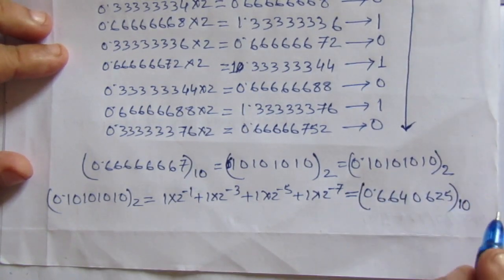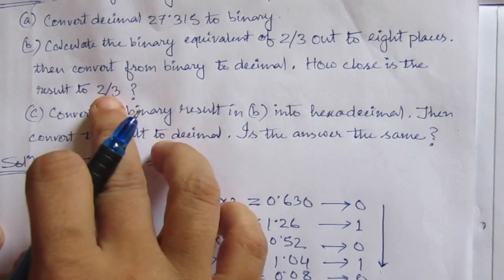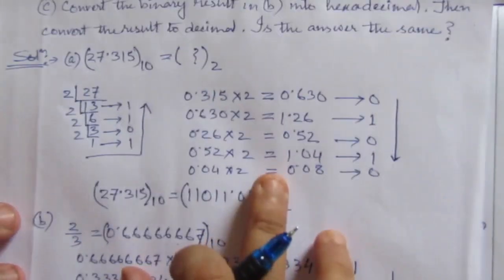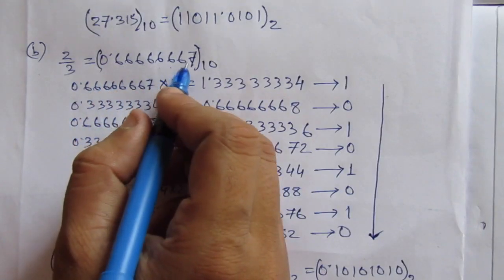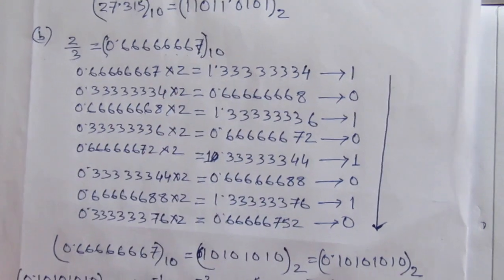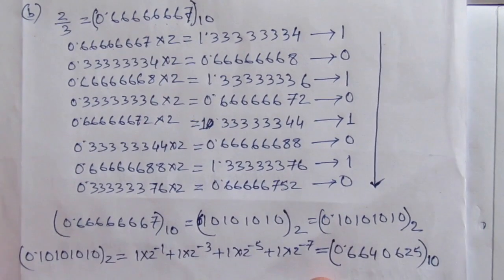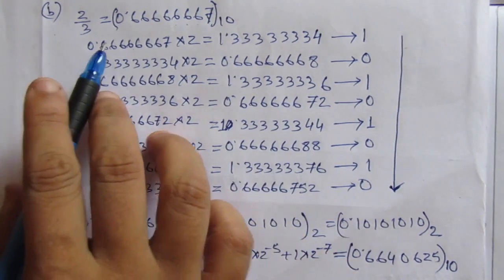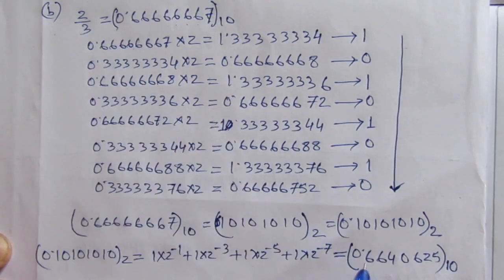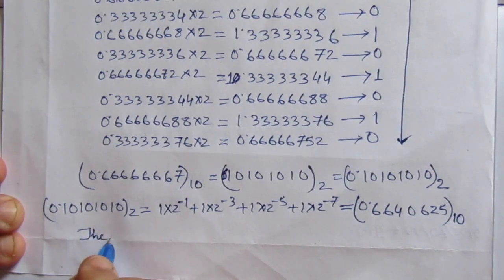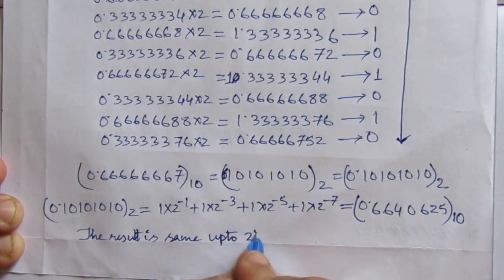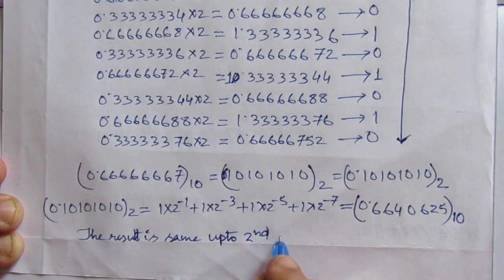Converting back, we get 0.10 in decimal. How close is this result to 2/3? Since 2/3 equals 0.666..., comparing the two numbers, this result equals 2/3 up to the second decimal place — the results match up to the second decimal point.